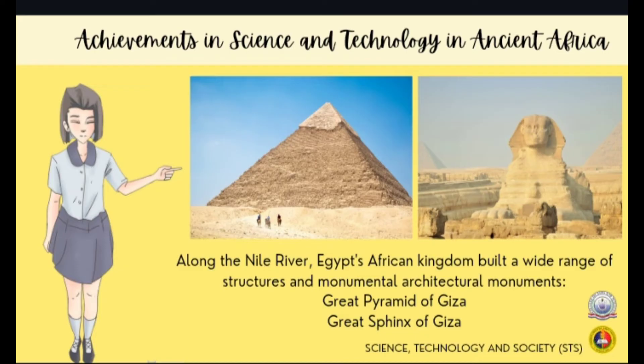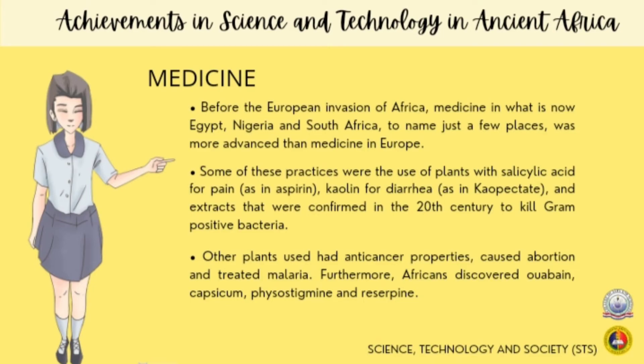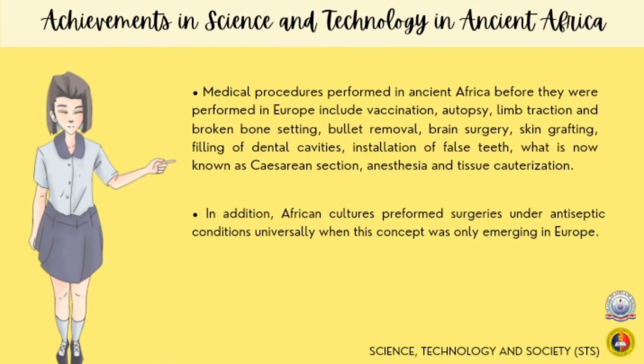Many treatments we use today were employed by peoples throughout Africa. Some of these practices included the use of plants with salicylic acid for pain and quinine for diarrhea. Other plants used had anti-cancer properties, caused abortion, and treated malaria. Medical procedures performed in ancient Africa before they were performed in Europe include vaccination, autopsy, limb traction and broken bone setting, bullet removal, brain surgery, skin grafting, filling of dental cavities, installation of false teeth, what is now known as cesarean section, anesthesia, and tissue cauterization.